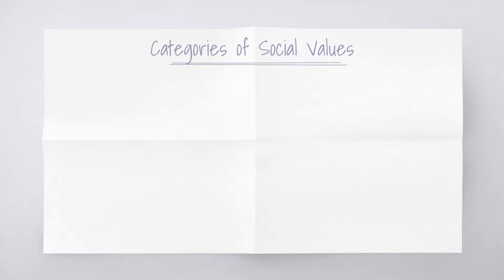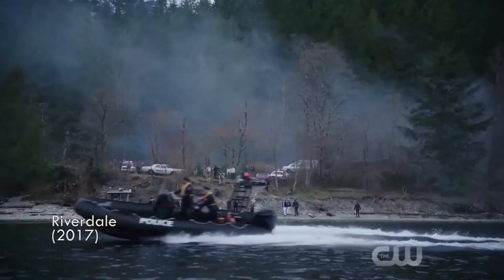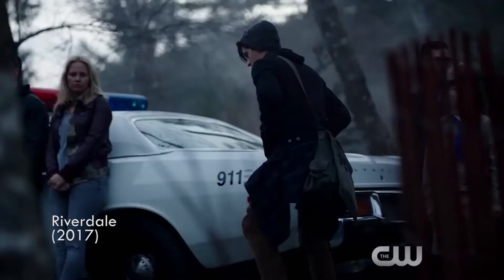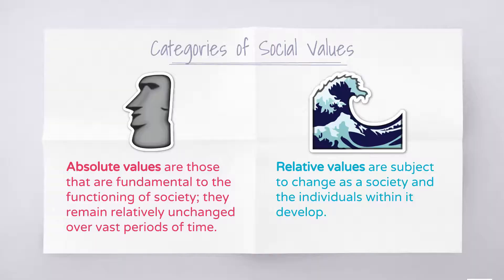When thinking about values, we can place them into two really broad categories. The first are absolute values — these are the values that are seen as being fundamental to the functioning of society. They stay relatively unchanged over time and help us all function as a society, such as that murder is wrong or that we all deserve an equal opportunity. Alternatively, there are relative values, which are those that might change depending on the individual, the cultural subgroup, or the context in which we find ourselves.